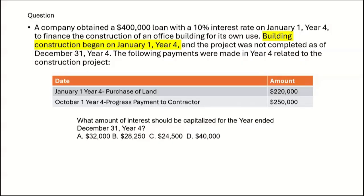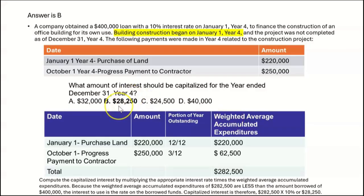The capitalized interest will be the lower of the interest on the weighted average accumulated expenditures versus the total interest paid. Total interest paid looks to be $40,000 — a $400,000 loan at 10% for the whole year. But what's the interest on the weighted average accumulated expenditures? We have to calculate that. The answer is $28,250 — that's how much interest we're going to capitalize. Let's see how we got there.